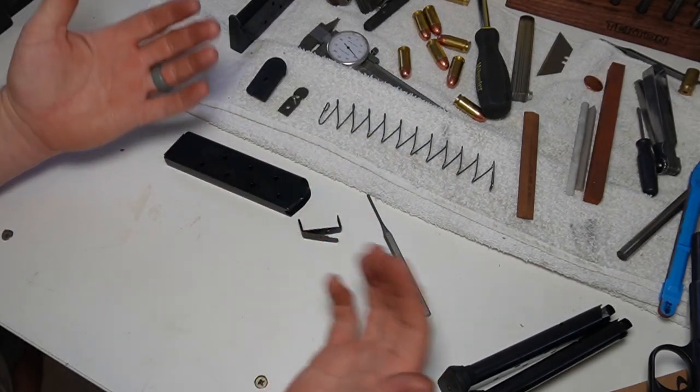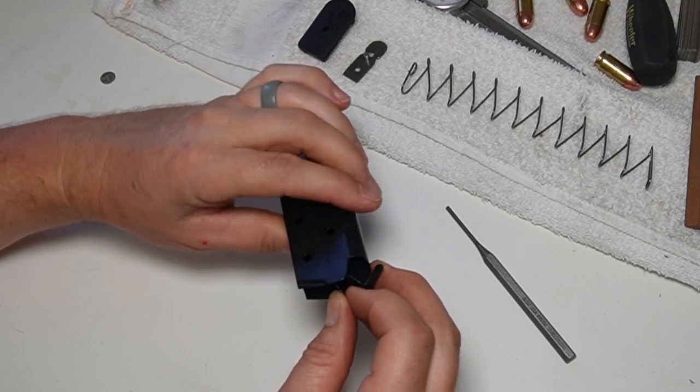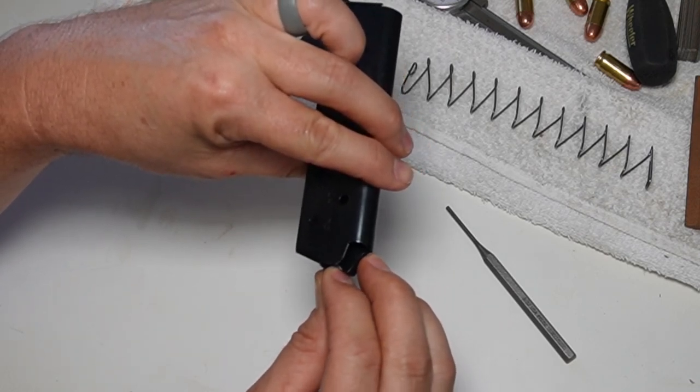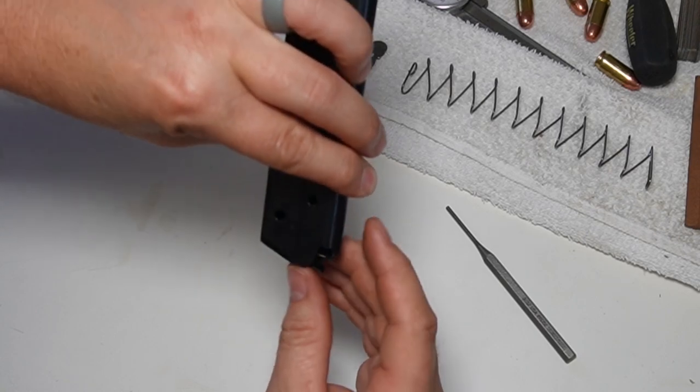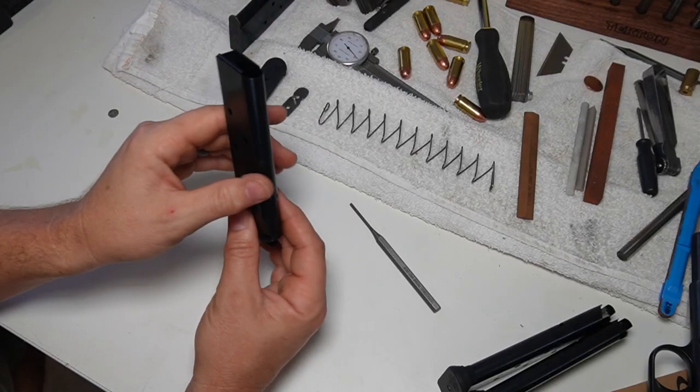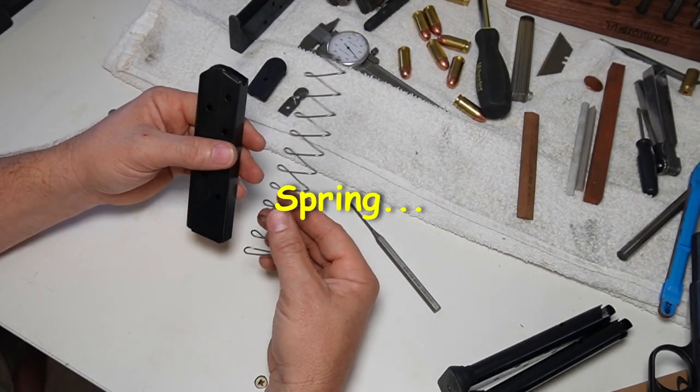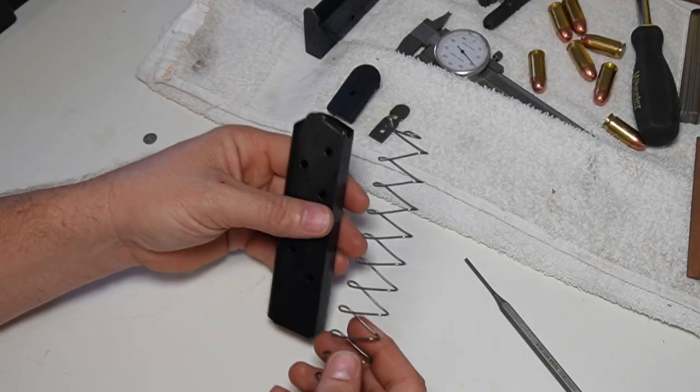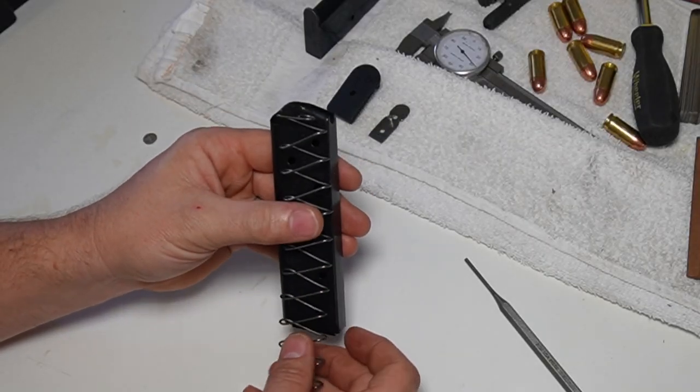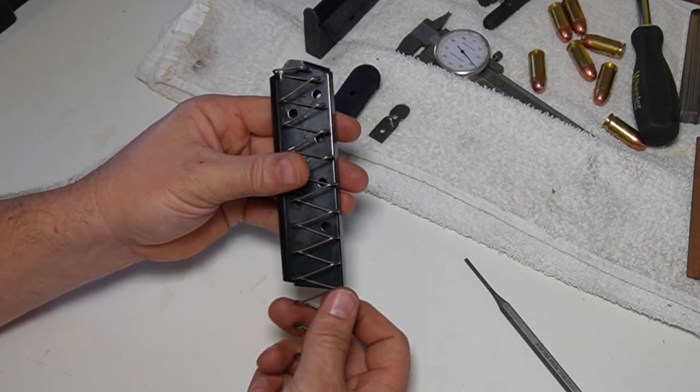To put it back together, you're just gonna do everything in reverse. Take your magazine tube and your follower. You're going to insert it at an angle and then you're going to pull it forward. You are then going to take your magazine spring and you want to make sure that this is oriented correctly. So you may think that because of your follower this has a slight upward angle, that this is the way that it would go. It actually goes the opposite way.